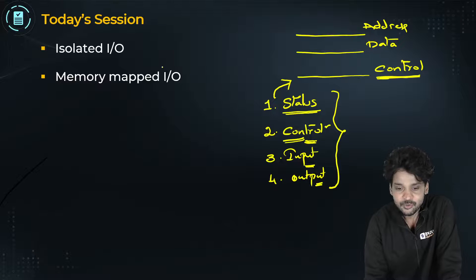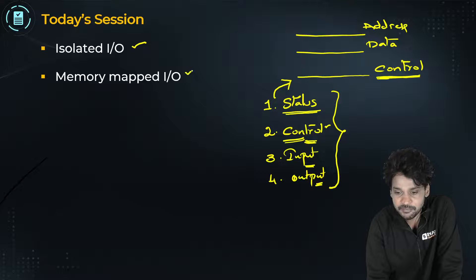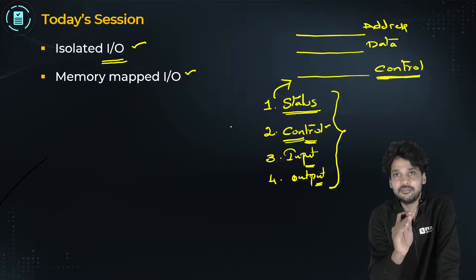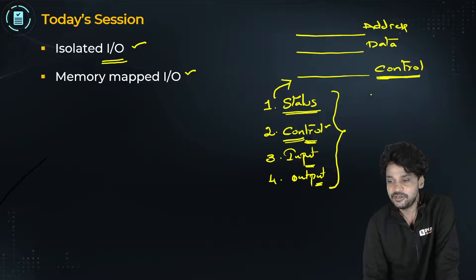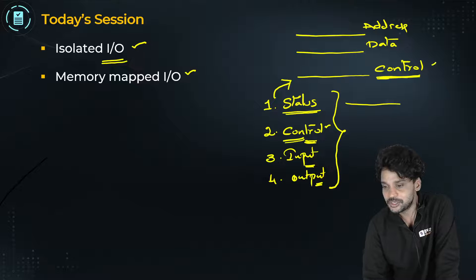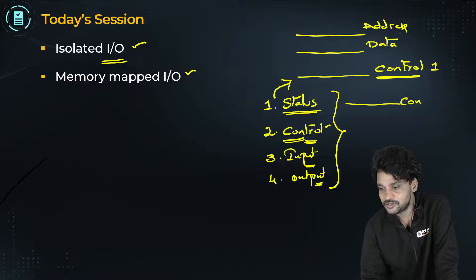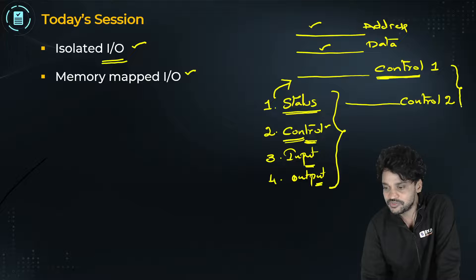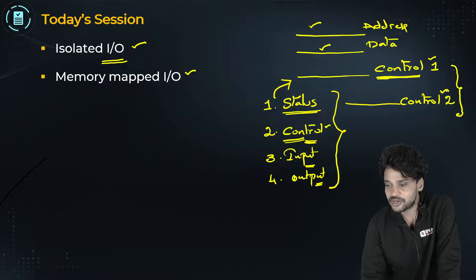Now, what is the difference between isolated IO and memory mapped IO? In isolated IO, in order to distinguish between memory transfers and IO transfers, the CPU uses two different control lines — control line one and control line two. The CPU uses the same address line and the same data line, but there are two control lines to distinguish memory transfers from IO transfers.